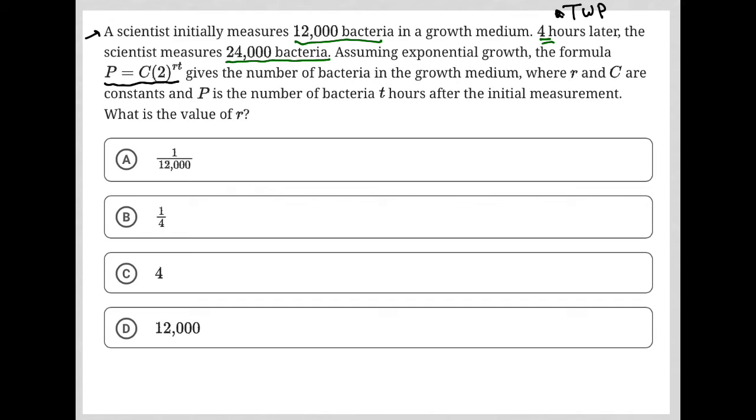All right, so this is a little bit tricky because it doesn't tell us that C is the original amount, but it actually is. I'm not sure why it doesn't do that. It just says C is a constant. So if you're familiar with exponential growth formulas, then hopefully you know that C is going to be 12,000.